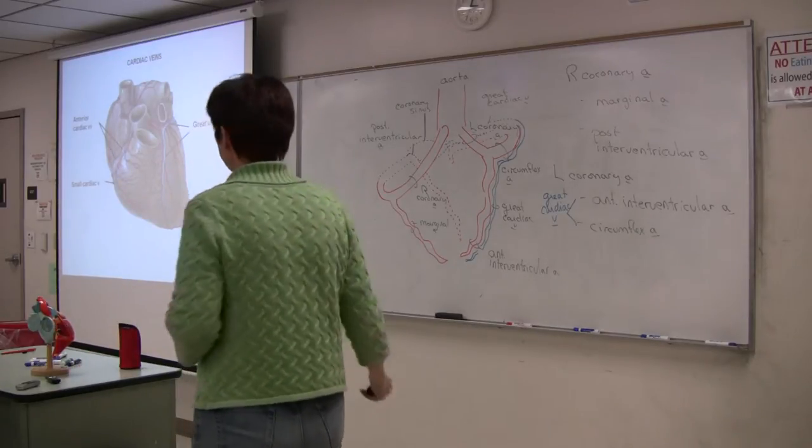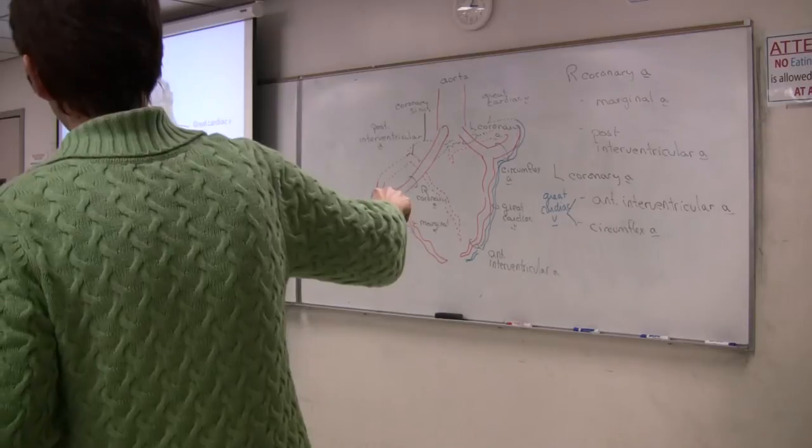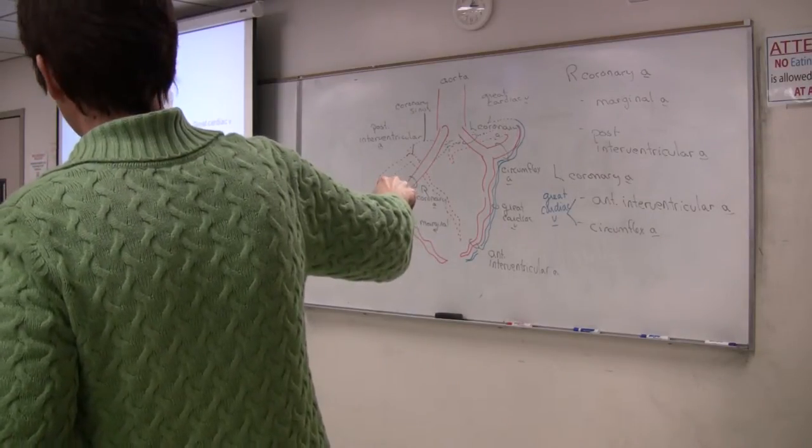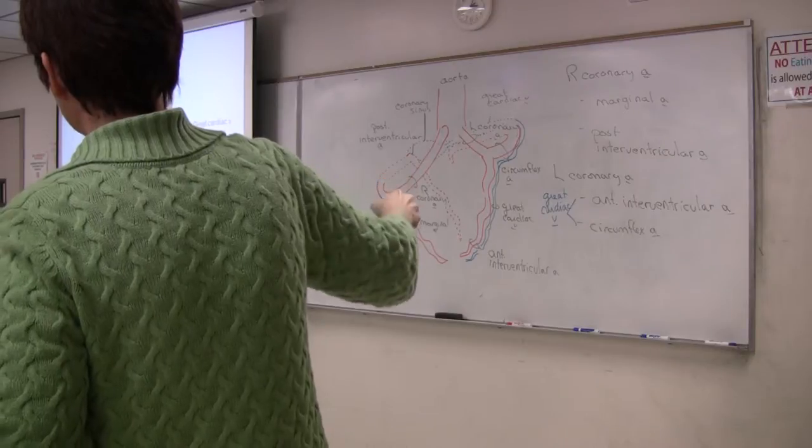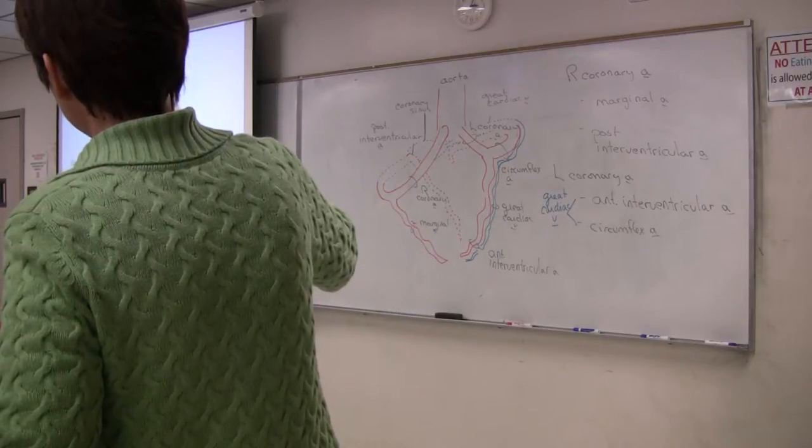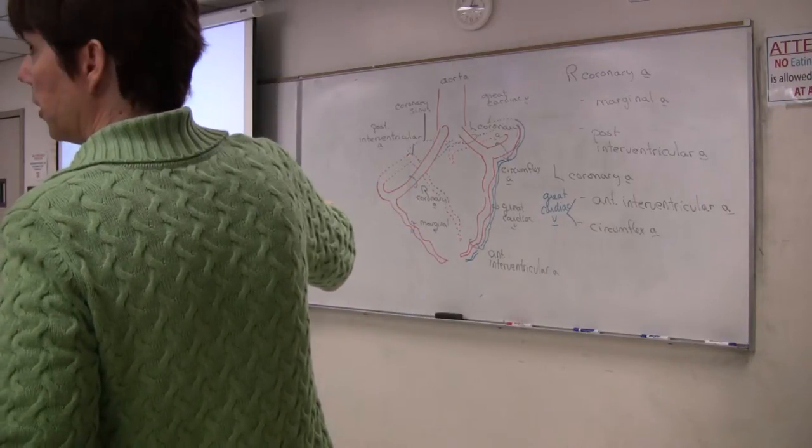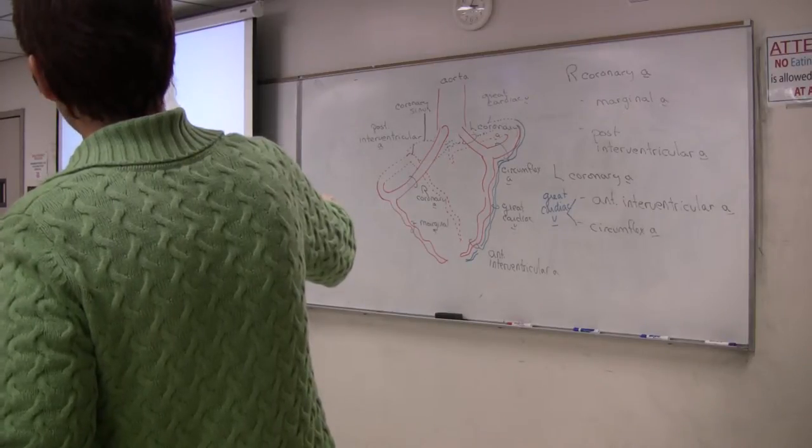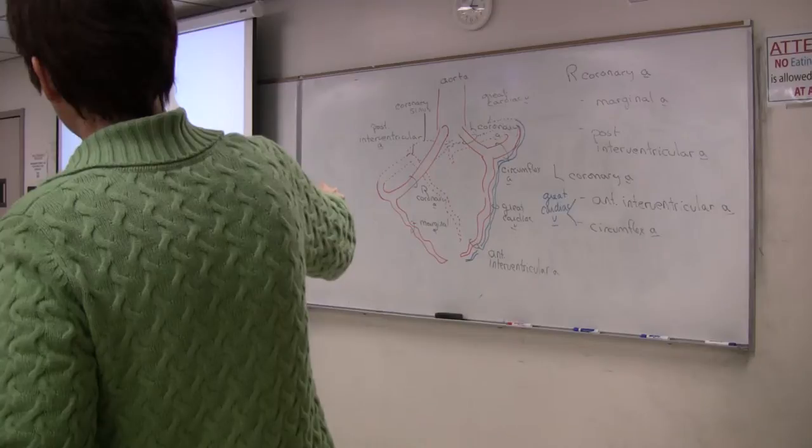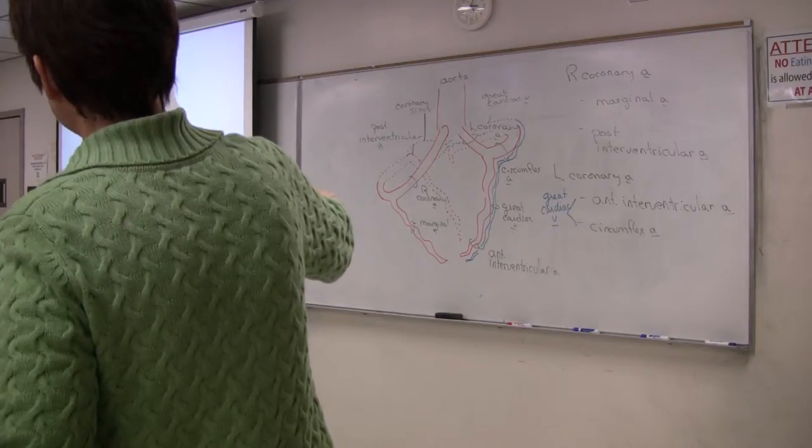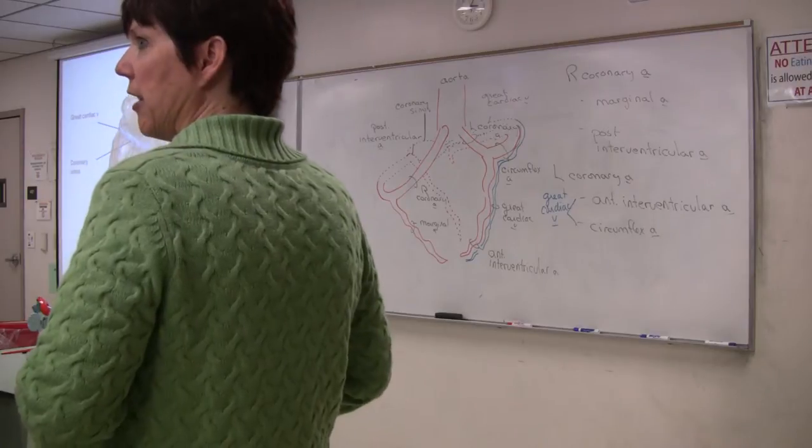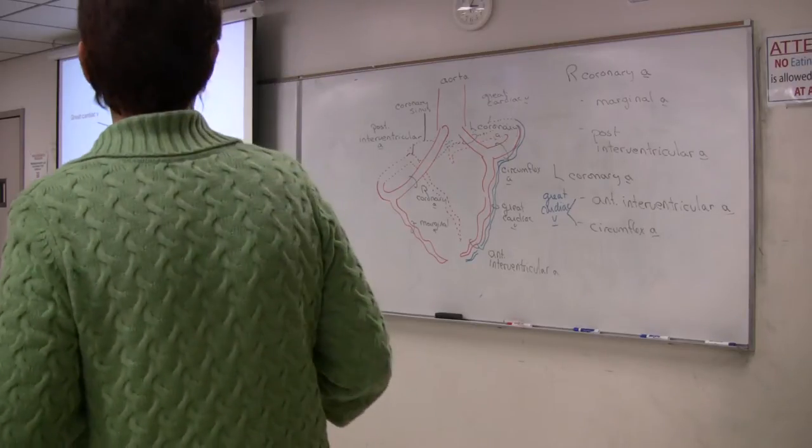So here on the anterior view, you can see the great cardiac vein with the anterior interventricular artery, and it's going to turn and go to the left, go around the left ventricle, between the atrium and ventricle. And then here on the back side, you can see it dilated at the base of the left atrium to form the coronary sinus. All right. We looked at that earlier when we were finding the coronary sinus inside the right atrium.